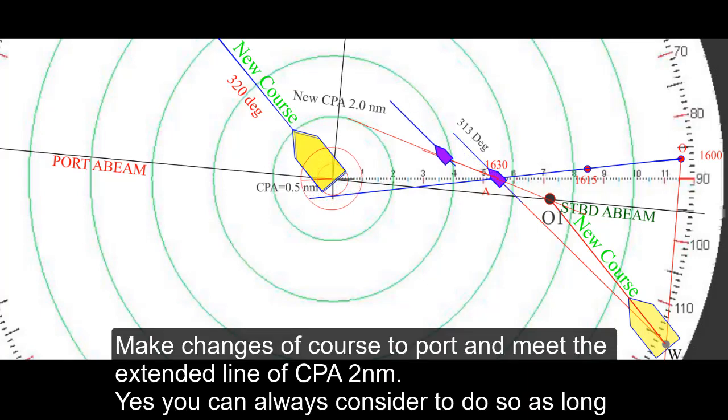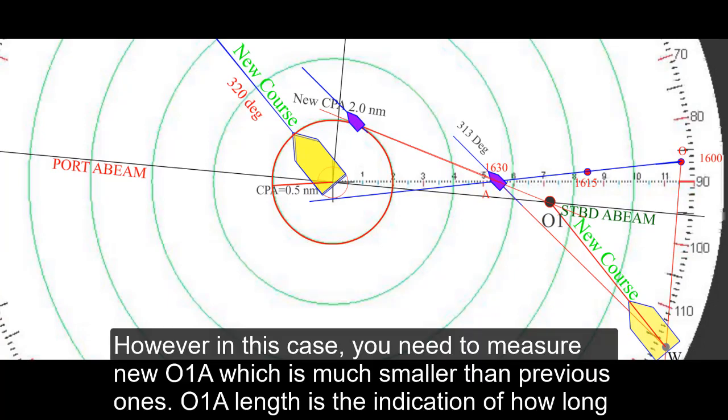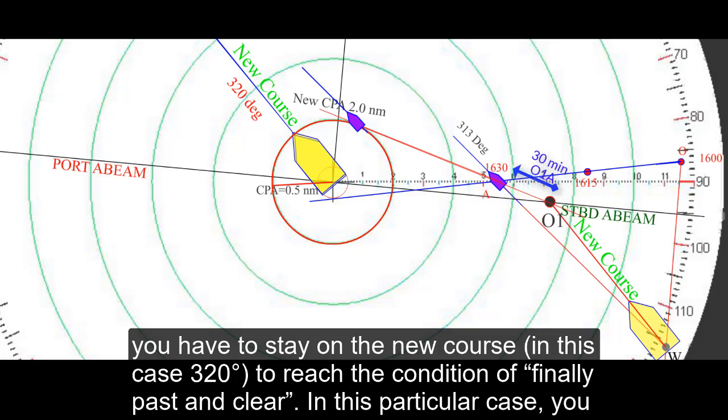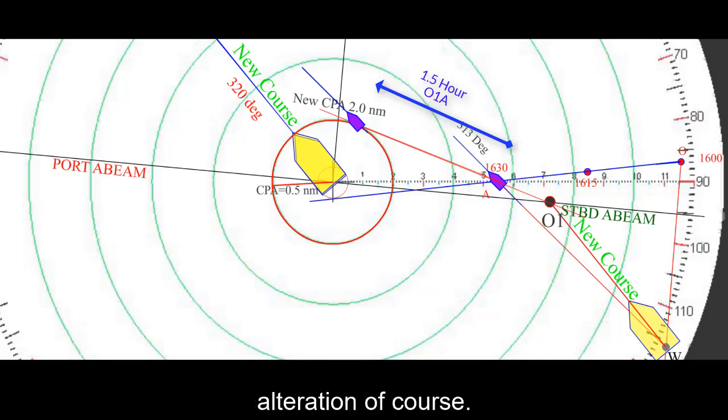Now you can make a change of course to port and meet the extended line of CPA 2 nautical miles. Yes you can always consider to do so as long as you are in sight of one another condition. However in this case you need to measure new O1-A which is much smaller than previous ones. O1-A length is the indication of how long you have to stay on the new course in this case 320 degrees to reach the condition of finally passed and clear. In this particular case you have to stay on the new course for about one and half hours that will result in a condition you have to consider reducing your speed even after alterations of course.